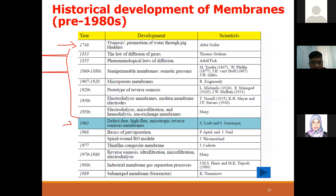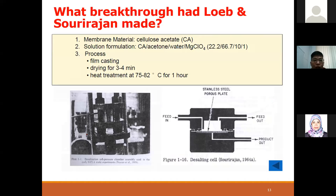It was not until around 1980 that this technology was used for water treatment. The most important discovery was in 1963 when a scientist started preparing membranes that were scalable, defect-free, and had high flux - meaning water can penetrate through very easily. From 1963 onwards, many innovations followed and better membranes were developed.